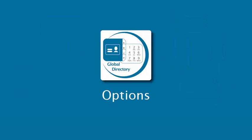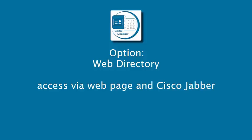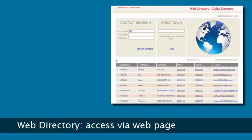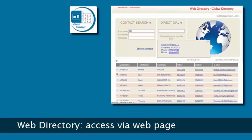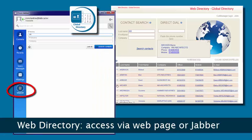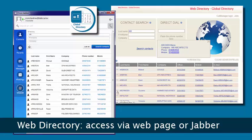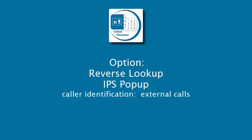Some of the optional features of Global Directory: with the Web Directory option, Global Directory may also be accessed via a web interface. Users can dial simply by clicking on the phone number. Web Directory may also be accessed via a Cisco Jabber tab. Reverse Lookup, IPS Popup, provides caller identification on external calls.